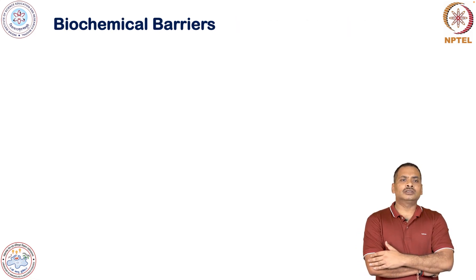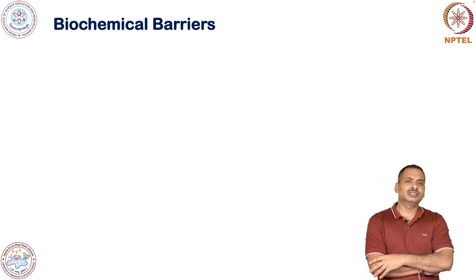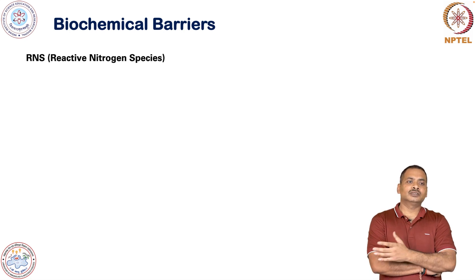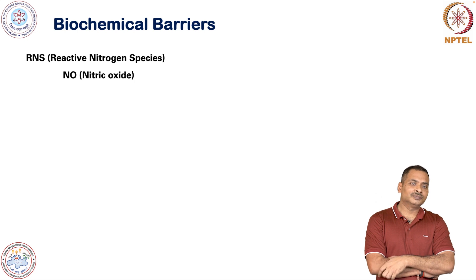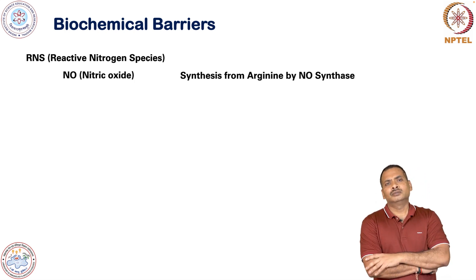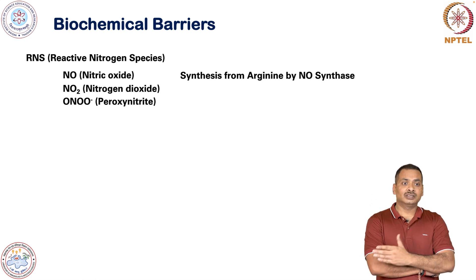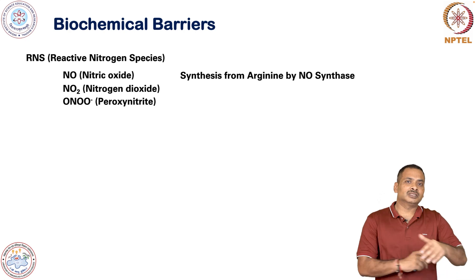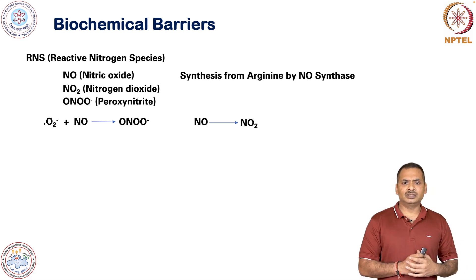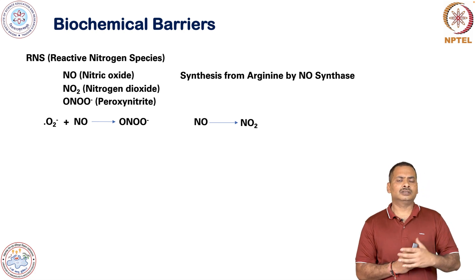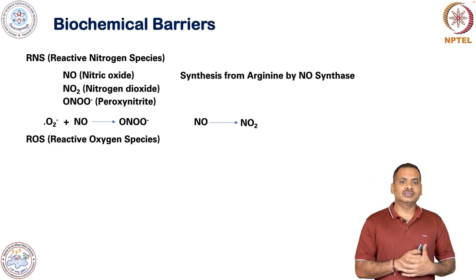I will now mention a few more biochemical barriers, which I have discussed in great length in the context of neutrophils. There are reactive nitrogen species — nitric oxide is produced in the cell, synthesized by nitric oxide synthase using arginine. Superoxide ions react with nitric oxide to produce peroxynitrite, and nitrogen dioxide is also synthesized. These create a hostile environment inside phagocytic cells.